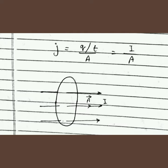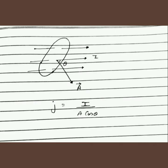We apply the formula J = I/A when the current and area vector of the cross section are in the same direction. So current density is the charge flowing per unit time per unit area normal to the direction of the current. If the area vector of the cross section makes an angle theta with the current, then current density J equals I upon A cos theta.